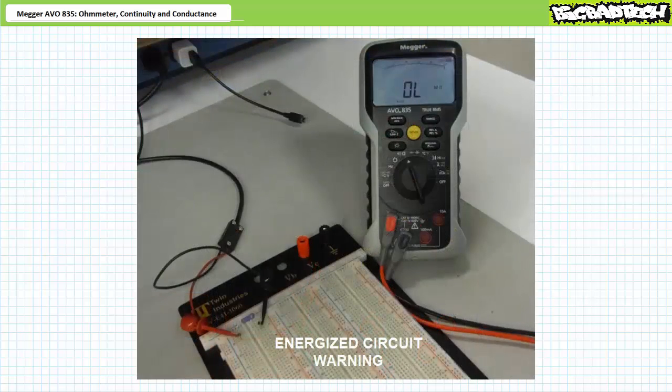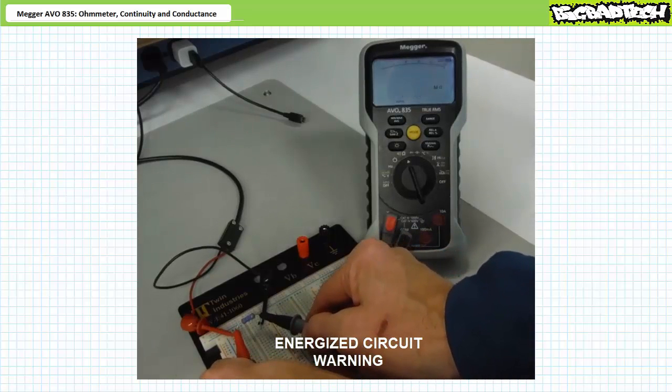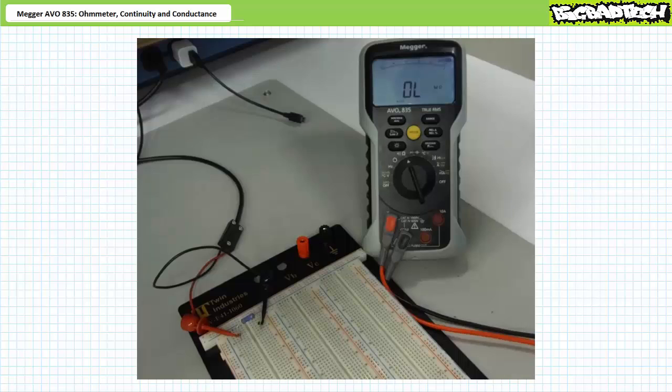Lastly, I must remind you that resistance, continuity, and conductance measurements must be taken on a de-energized circuit. In the event the Megger AVO835 detects a live circuit, the instrument will sound an audible pulse beep and flash voltage over limit on the display. This audible warning prevents an operator from damaging the instrument, the circuit, or themselves in the case of an errant energized circuit.